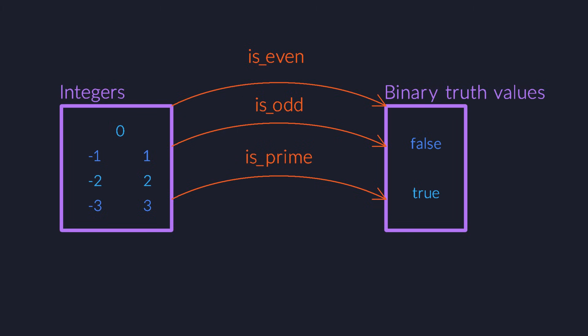We even have functions from a type to itself. The square function takes an integer and squares it, so it's an example of a function from integers to integers. Another example would be the identity function, which simply returns whatever number you give it. And you can compose these functions, so you could ask whether the square of a number is even.